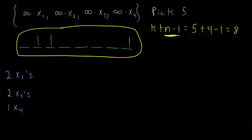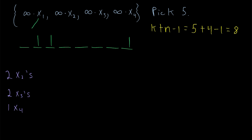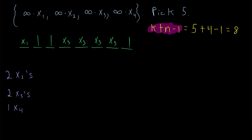How does this describe a combination of 5 of these objects? We begin with the x1s — there's one space for an x1, then we encounter a bar, so we stop with x1s and move on to x2s. Then we encounter another bar, so there won't be any x2s, and we move on to x3s. We have several spaces for x3s, then a bar says stop with x3s and move on to x4s, but there are no more spaces, so we're done. This makes clear how placing n minus 1 bars in k plus n minus 1 spaces describes a combination with repetition.